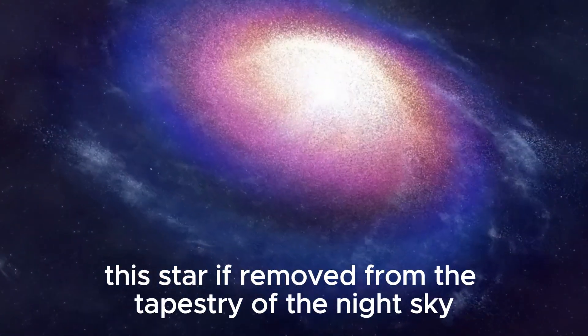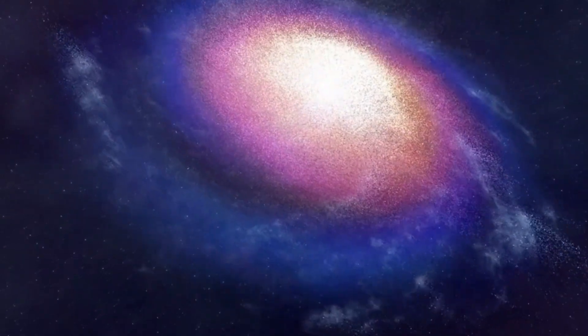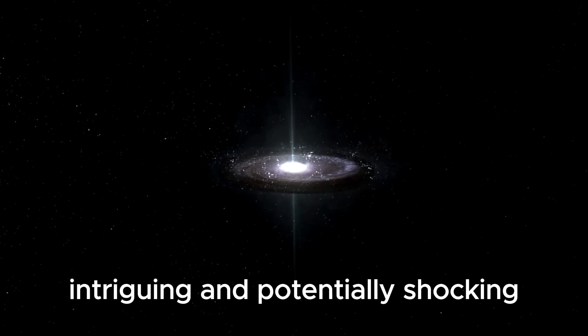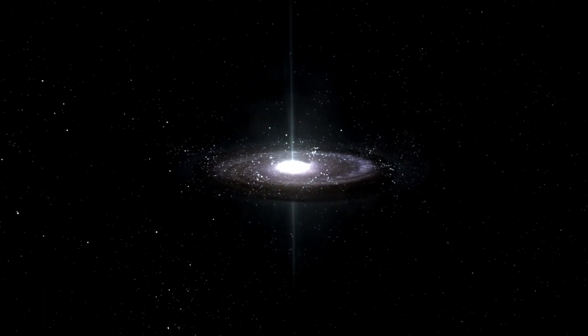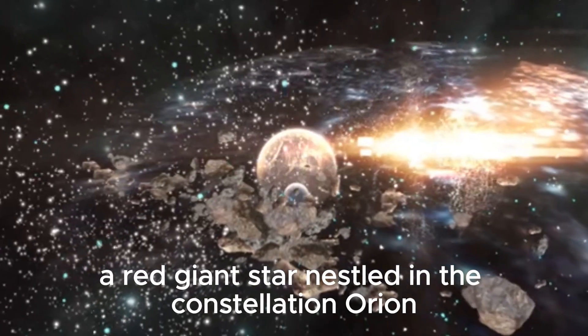This star, if removed from the tapestry of the night sky, would leave an indelible void. This celestial entity, intriguing and potentially shocking, goes by the name of Betelgeuse, a red giant star nestled in the constellation Orion.